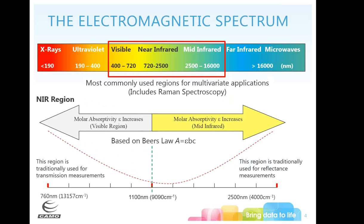Let's talk about where NIR is on the electromagnetic spectrum. The near-infrared region is between 720 and 2,500 nanometers, which in wave numbers is about 4,000 to 13,000 wave numbers. We tend to go back and forth in the near-infrared depending on which scheme people are used to working in, whether it's visible or mid-infrared.